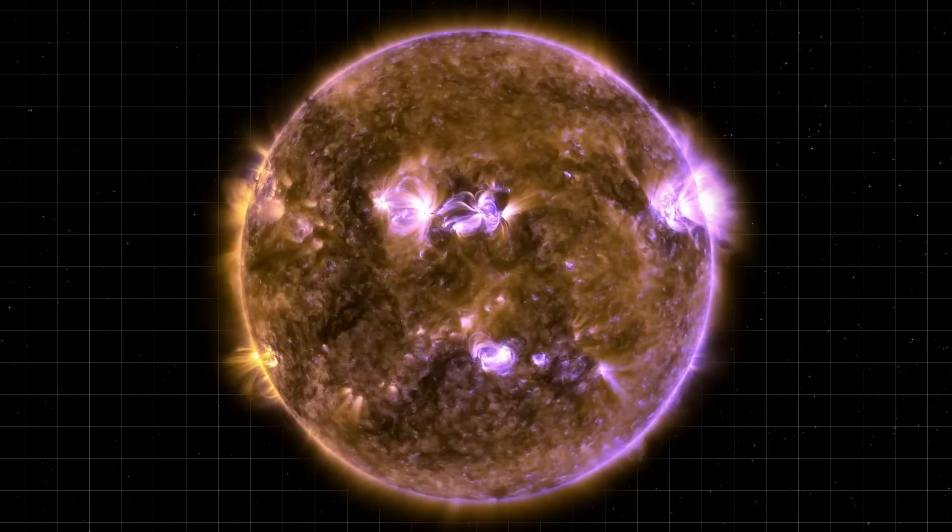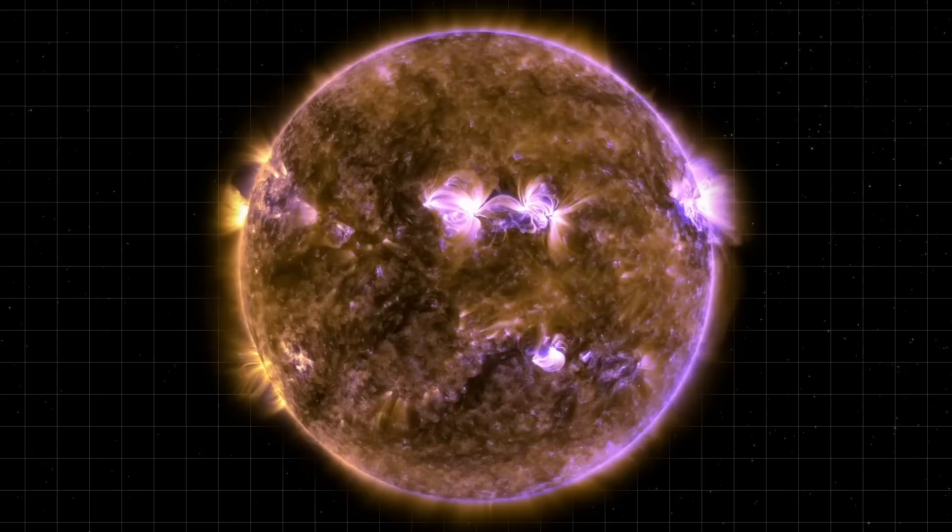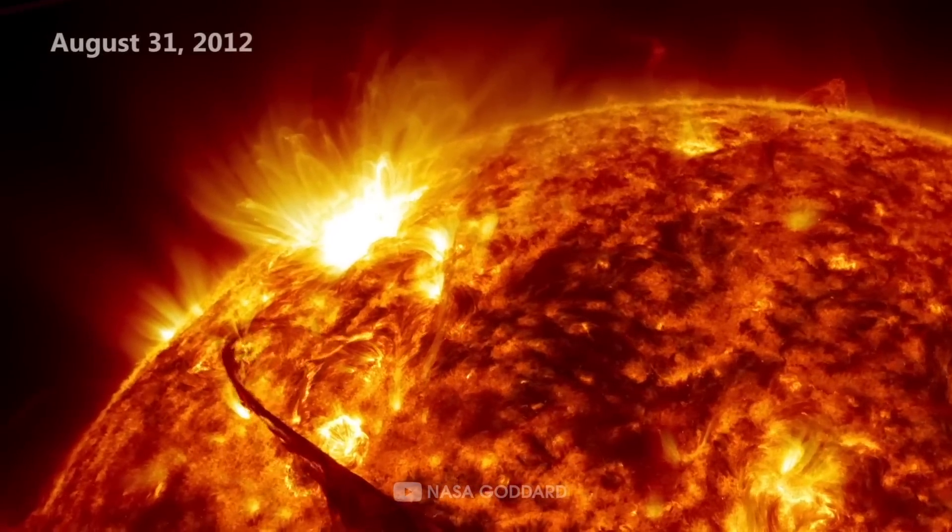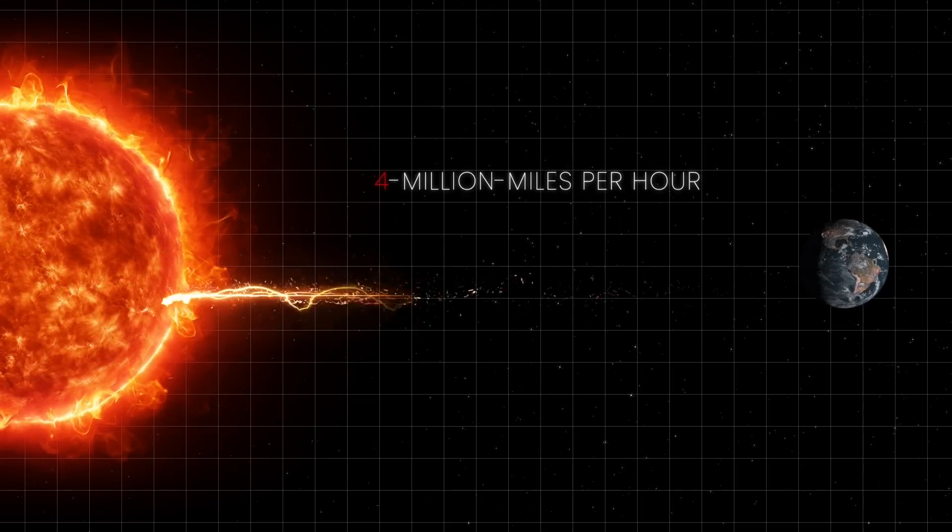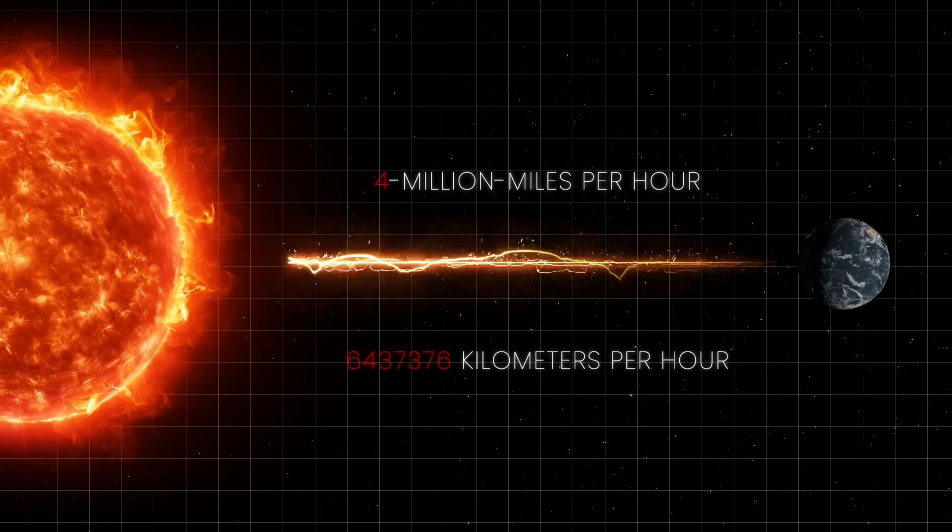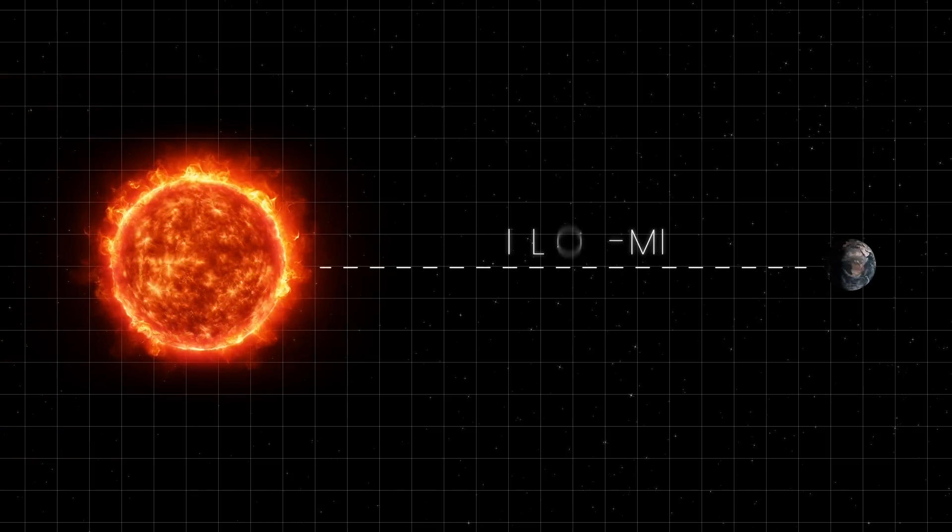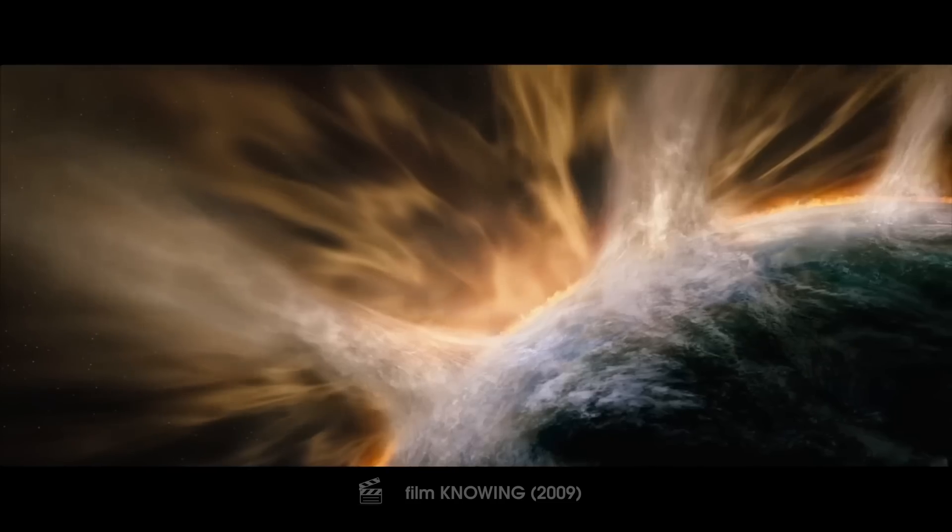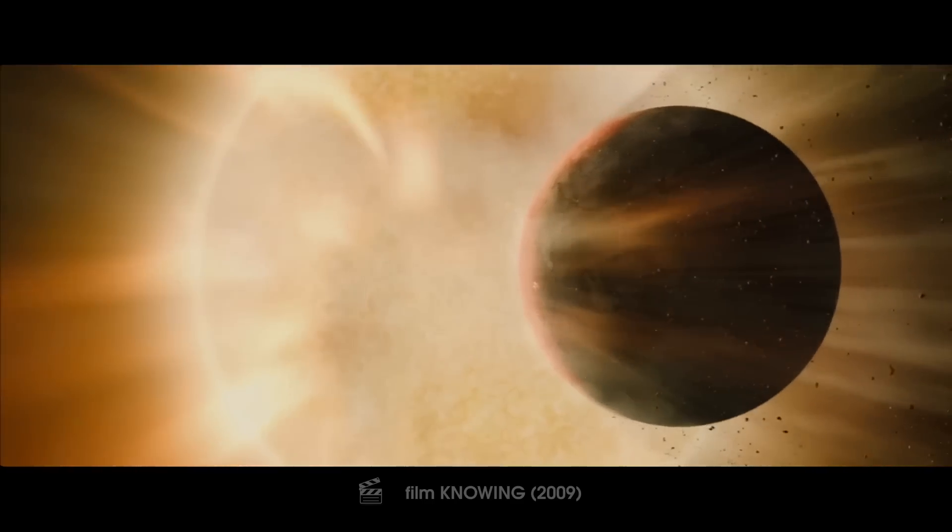The white light Carrington observed was a huge solar flare, an intense burst of radiation resulting from the release of magnetic energy stored in the sun's atmosphere. This flare was so powerful that it unleashed a massive coronal mass ejection directly towards Earth. Travelling at an astonishing speed of over 4 million miles per hour, the CME reached Earth in just 17.6 hours, a remarkably short time considering the sun is 93 million miles away from us. When the CME collided with Earth's magnetosphere, it triggered a geomagnetic storm of unprecedented intensity. The impact was immediate and far-reaching, disrupting the planet's magnetic field and inducing currents in the ground and in telegraph lines.